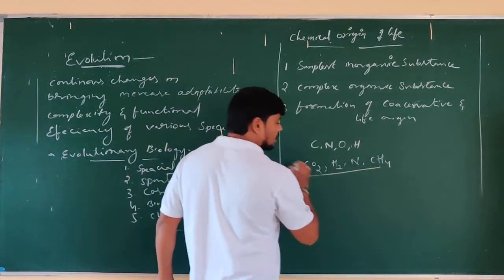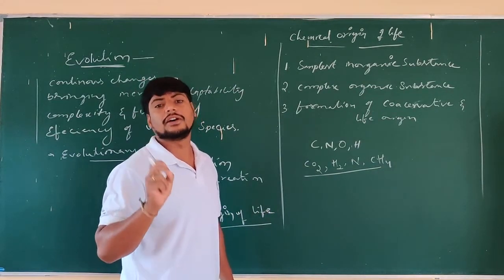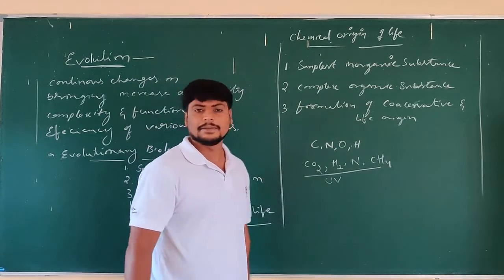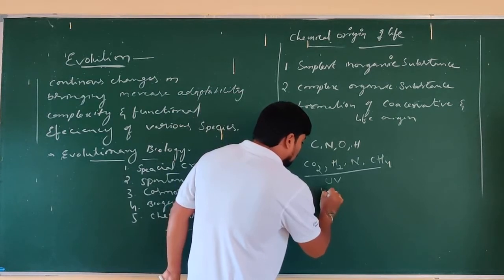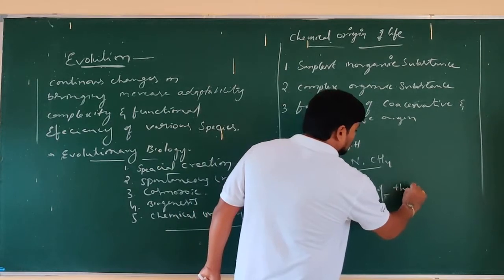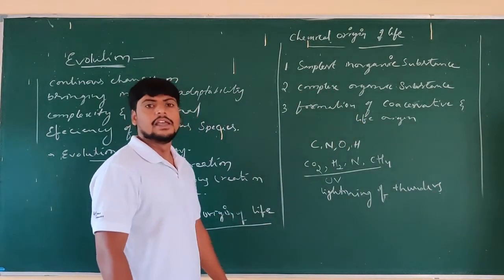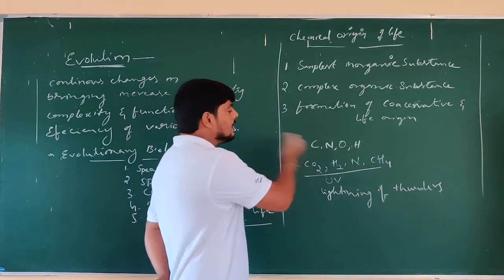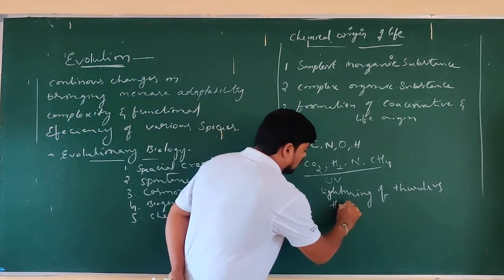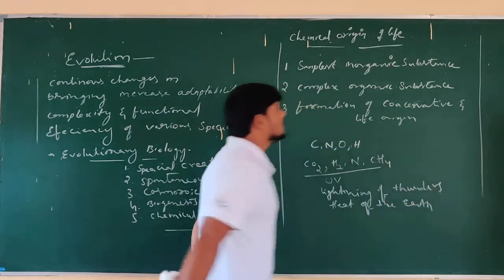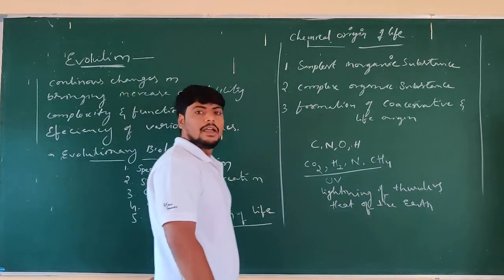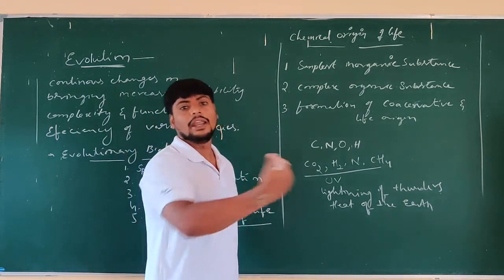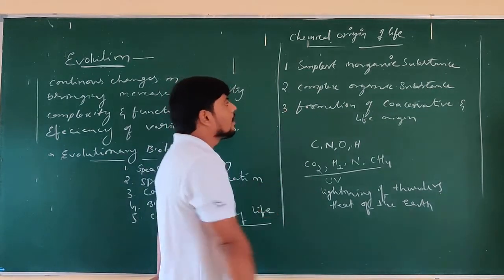For the formation of these simplest inorganic substances, energy was required. This energy was supplied by UV rays from the Sun, by lightning and thunder, and by the heat of the early Earth. Once the active temperature fell to around 250–60 degrees Celsius, these changes occurred and the formation of simplest inorganic substances took place.